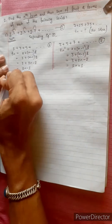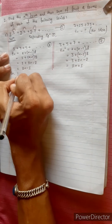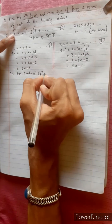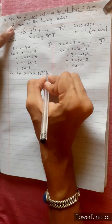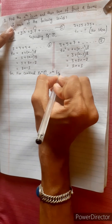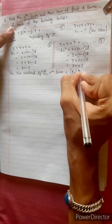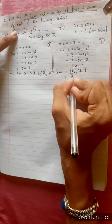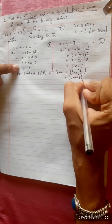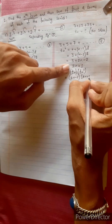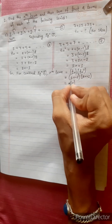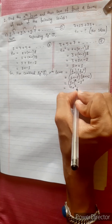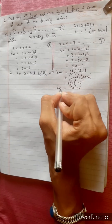Tn ratio, Tn dash ratio. For the combined equation, the nth term is given by Tn multiplied by Tn dash, which is 2n minus 1 times 2n plus 1. Using the identity a minus b times a plus b equals a squared minus b squared, this gives 4n squared minus 1. Combined equation 1.